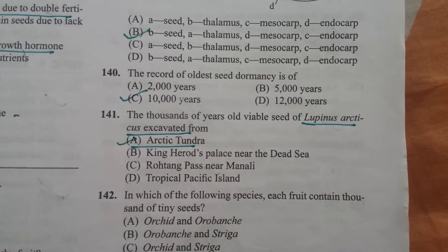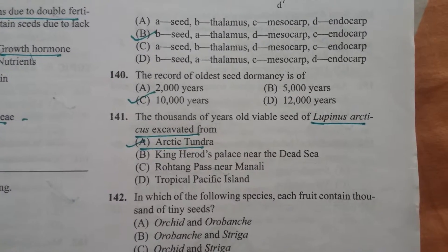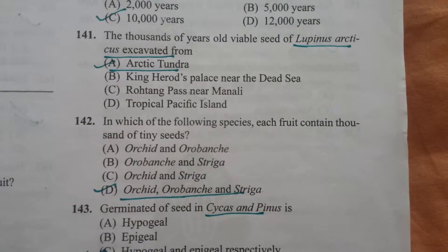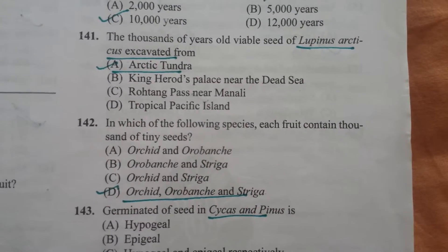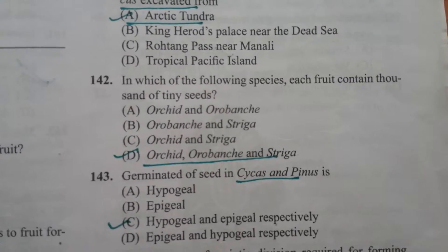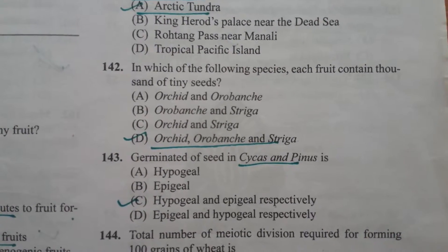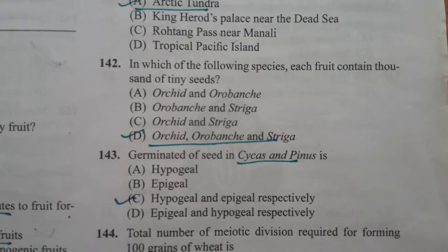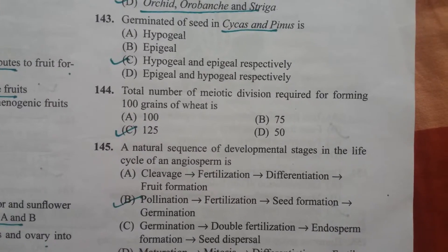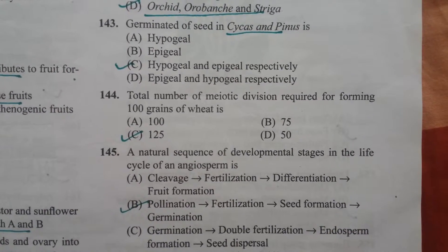The 10,000-year-old viable seed of Lupinus arcticus was excavated from arctic tundra. In which of the following species does each fruit contain thousands of tiny seeds? Orchid, Orobanche, and Striga. Germination of seed in Cycas and Pinus is hypogeal and epigeal respectively. Total number of meiotic divisions required for forming 100 grains of wheat is 125.